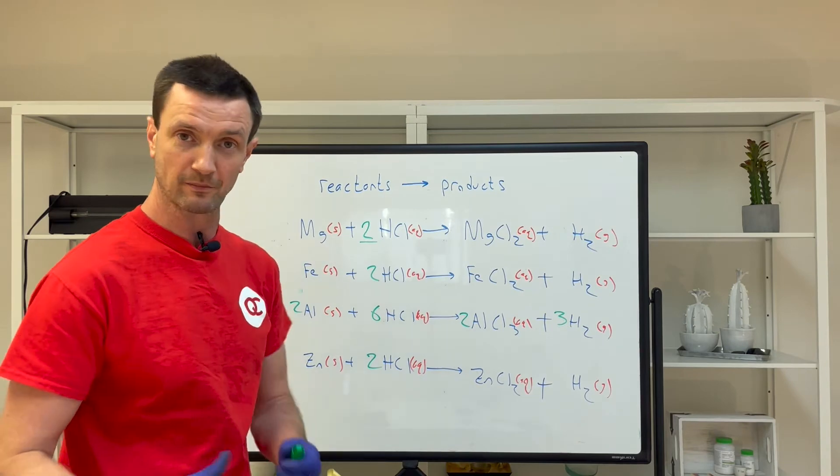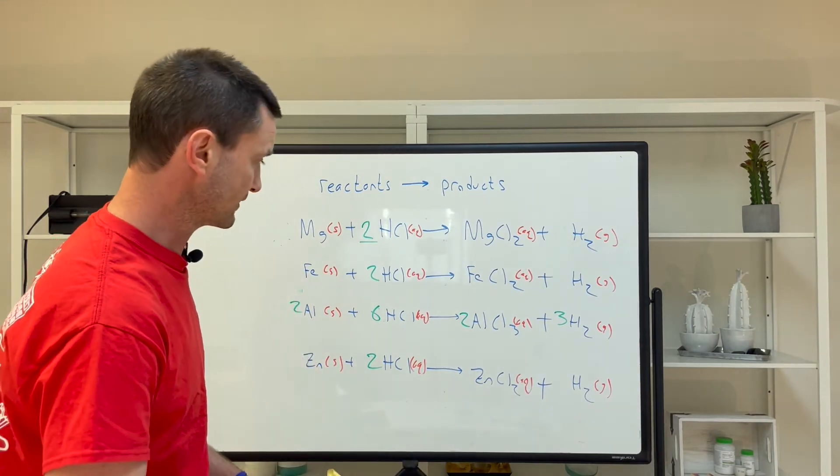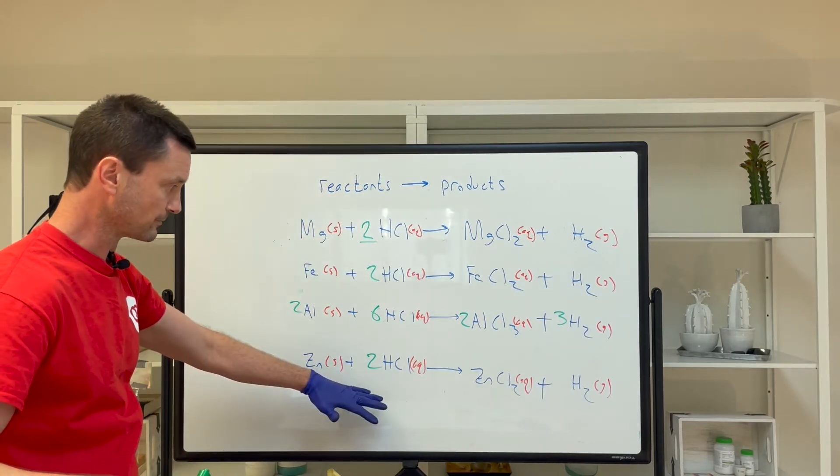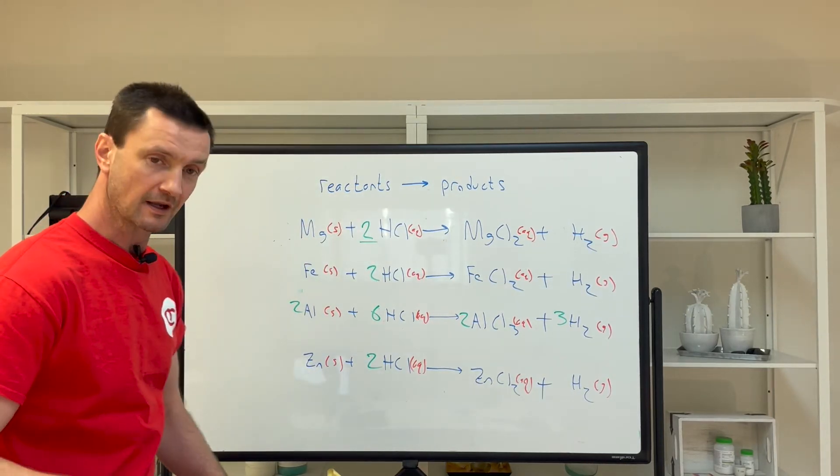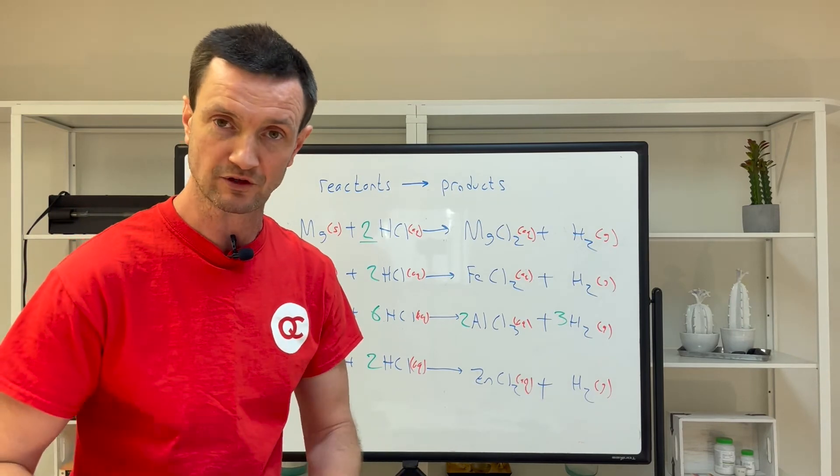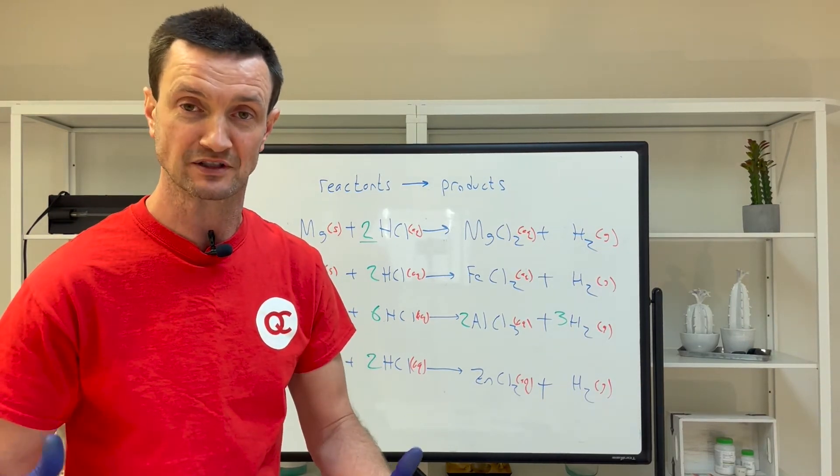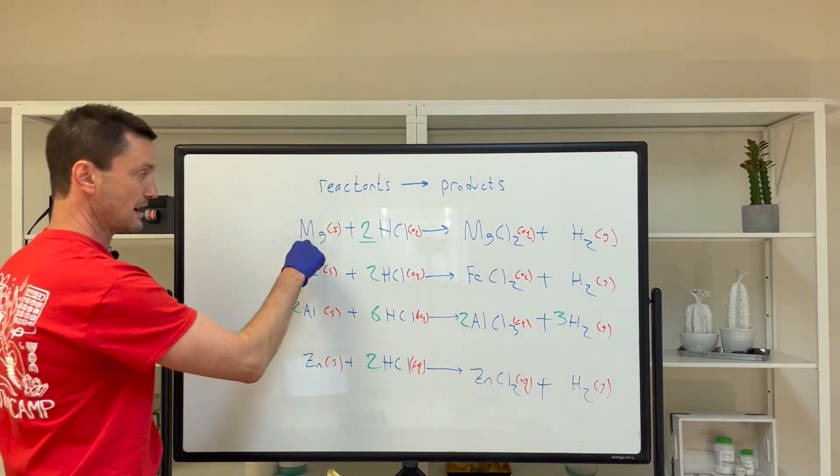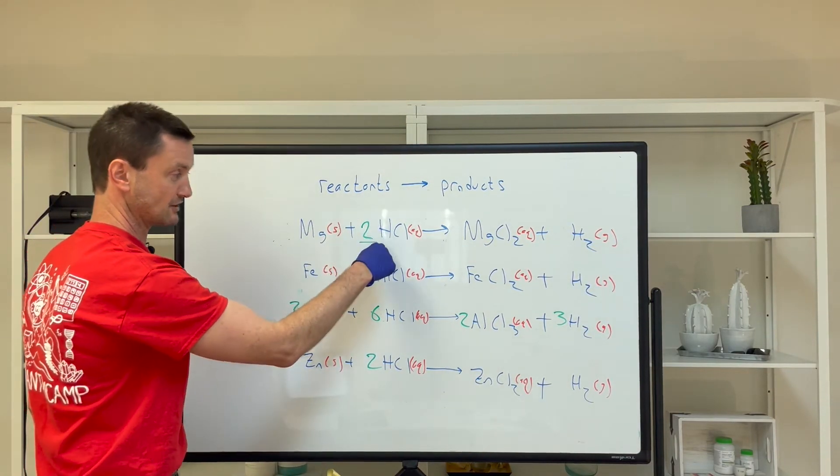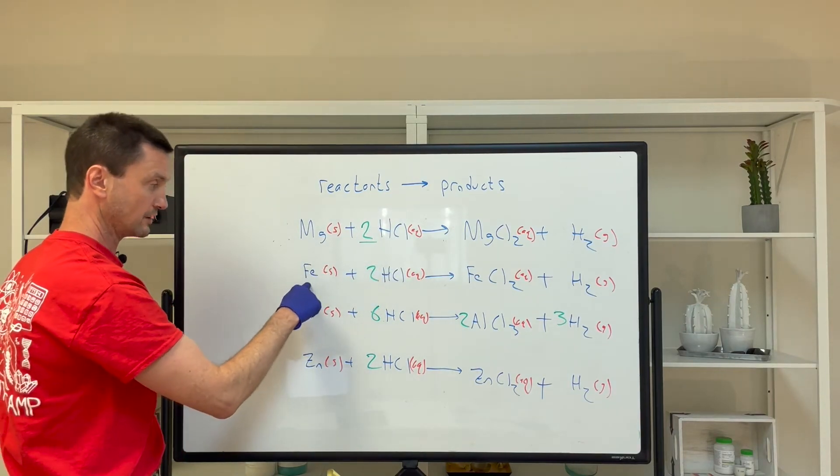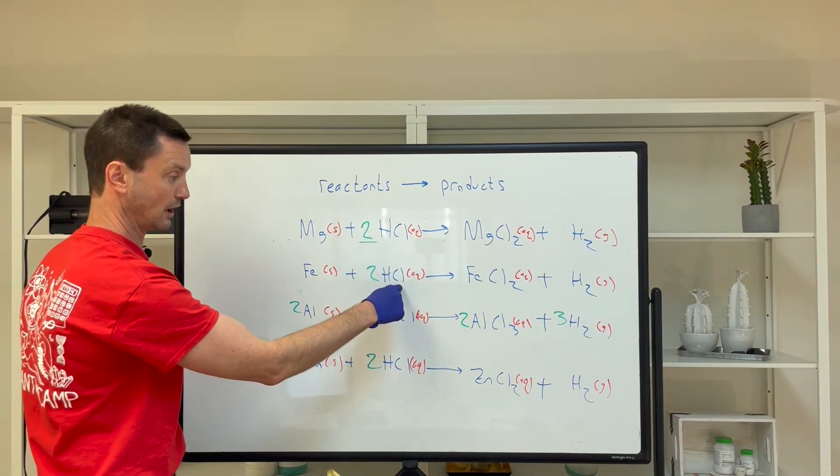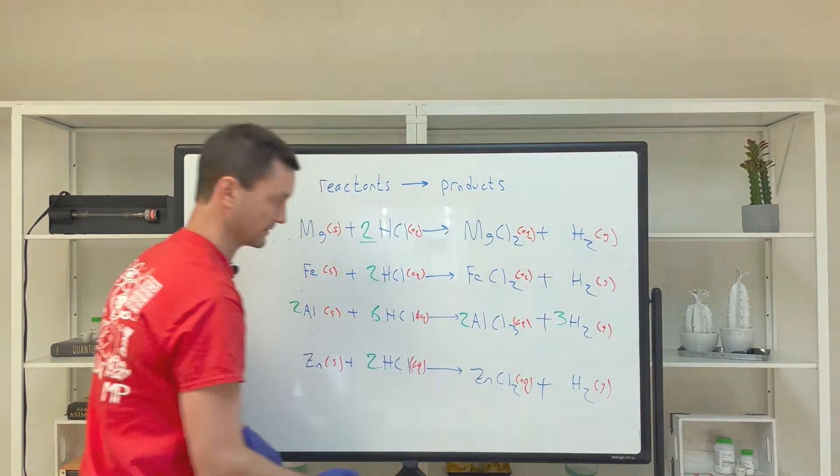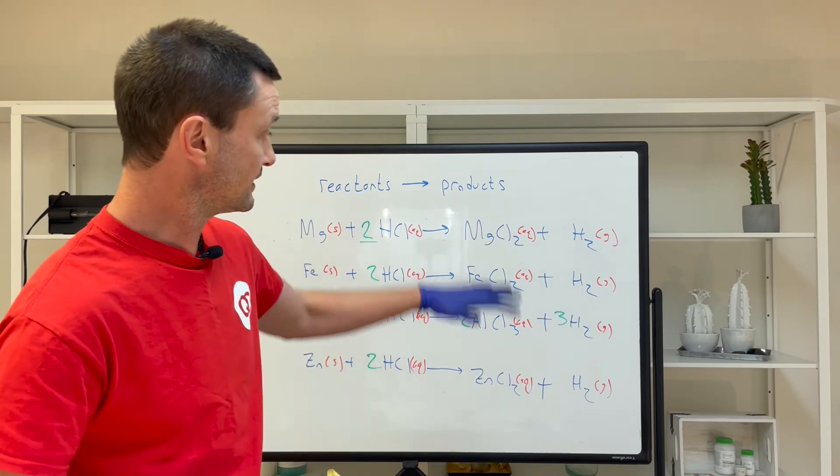Four if you include the one from the first lab. You might notice a pattern amongst these four chemical reactions. Chemists call this a single displacement reaction. The metal displaces the hydrogen to bond with the chlorine.